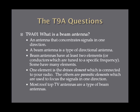One element is the driven element, which is connected to your radio and has power going through it when transmitting. The other is called a parasitic element — or parasitic elements if there are more than one — which are used to focus signals in one direction. The driven element produces the signal, and the parasitic element acts as a lens that focuses those signals in one direction. A rooftop TV antenna is a type of beam antenna.